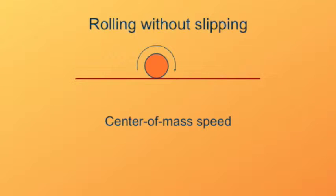We can specify this by the center of mass speed, some quantity v, that's how fast the thing is rolling along its surface.